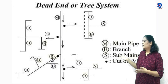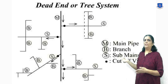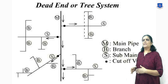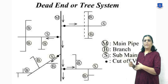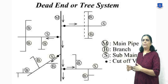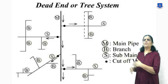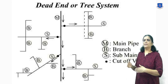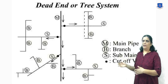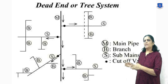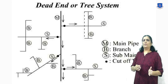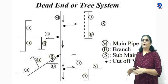The dead-end system, as seen in the figure, is suitable for all towns and cities having no definite pattern of road layout. This system is relatively cheap, and determination of discharge and pressure is easier due to the fewer number of pipes. The main disadvantage is that due to many dead ends, stagnation of water occurs in the pipes.